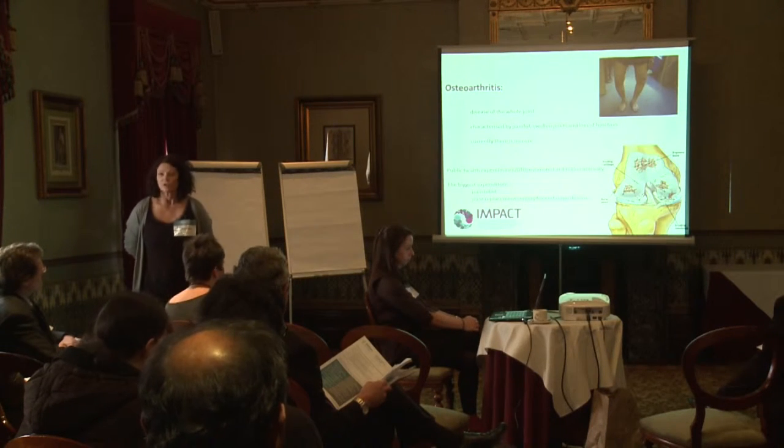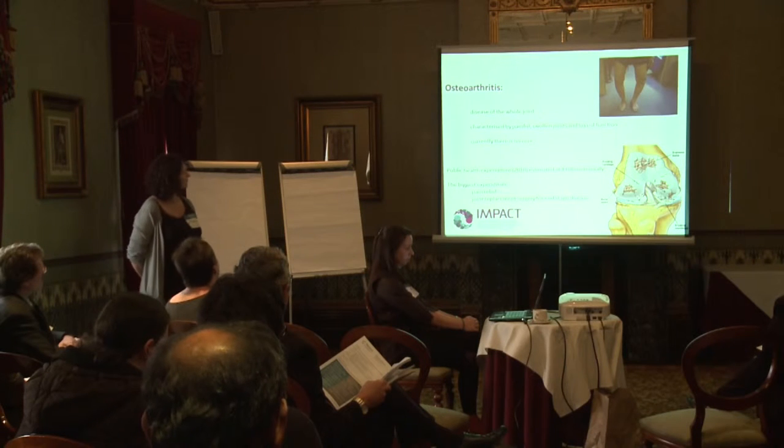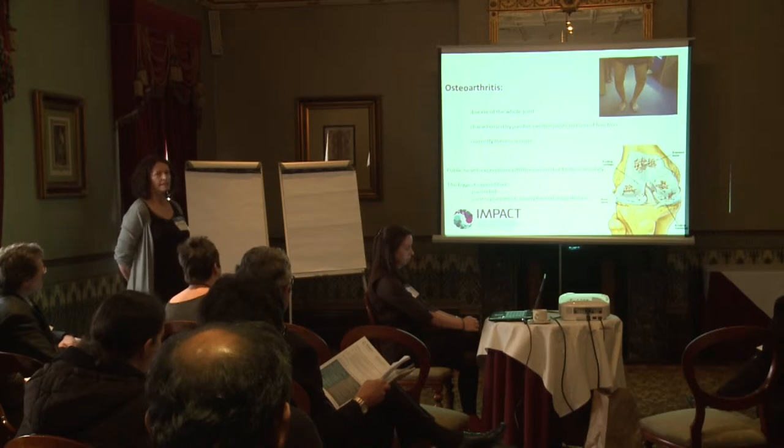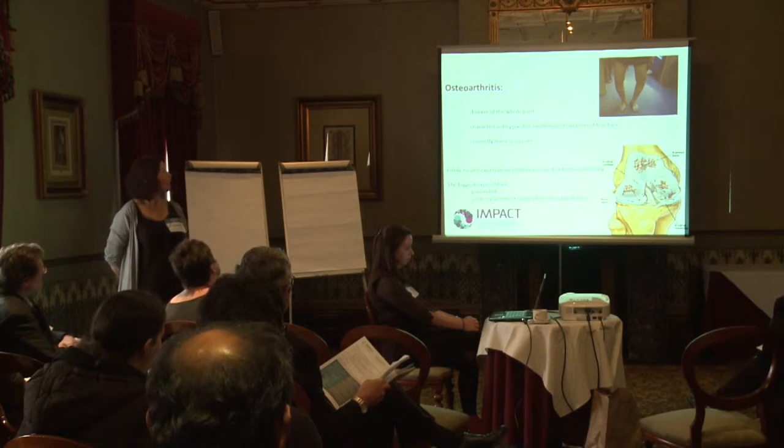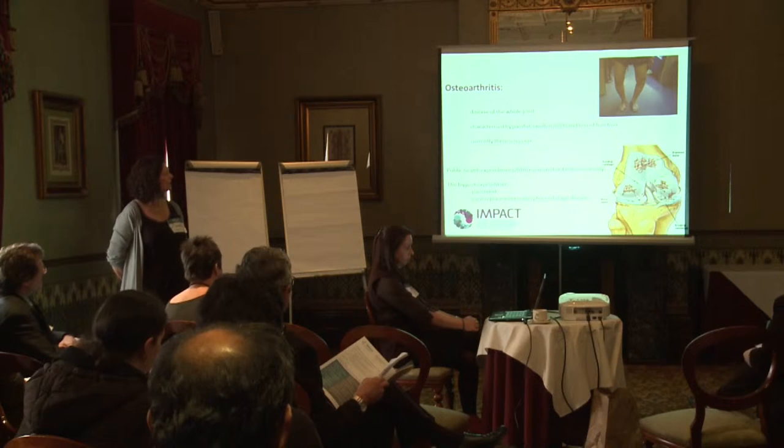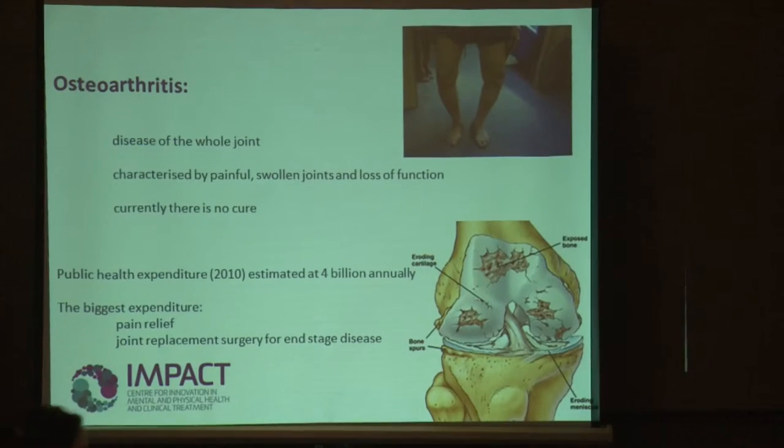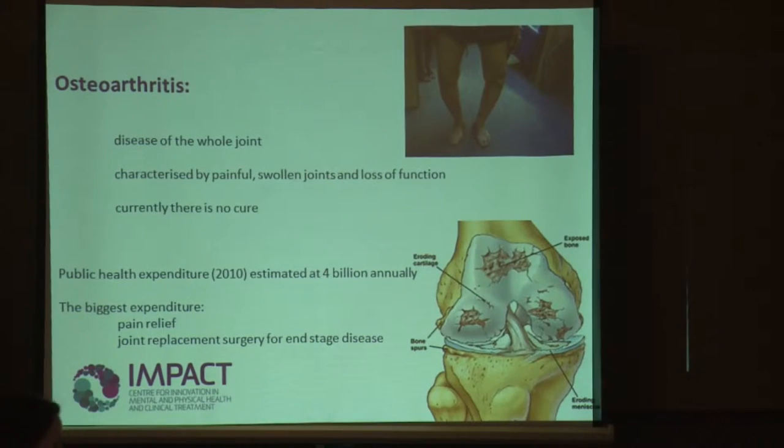These two diseases are related to age. Osteoarthritis is a disease of the whole joint, characterised by painful, swollen joints and loss of function — there's no cure for it. Public health expenditure is quite high at four billion dollars annually, with the biggest expenditure due to pain relief and joint replacement surgery for end-stage disease.